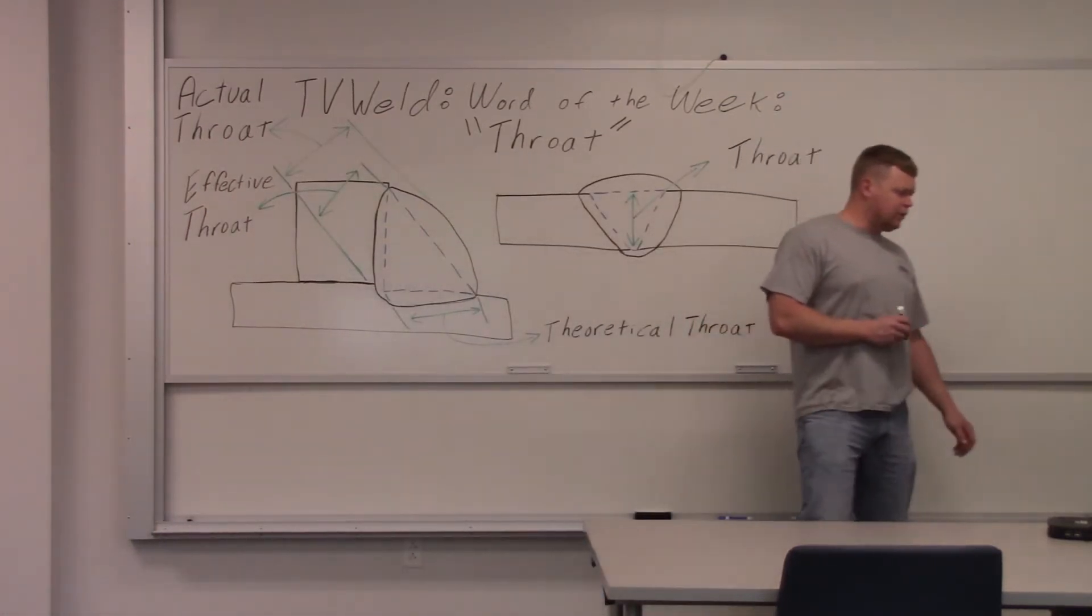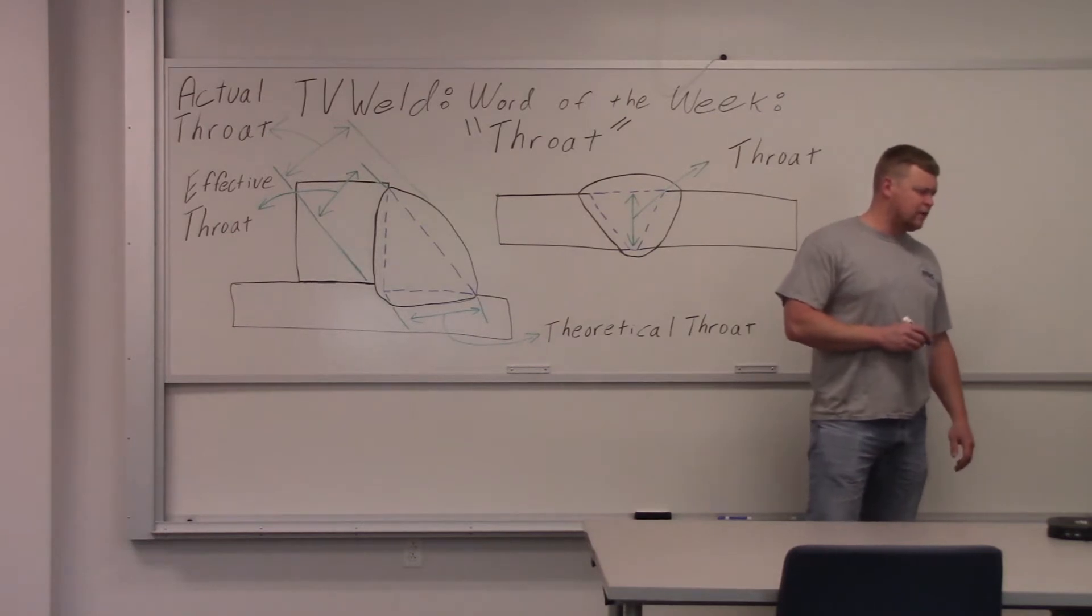Let's read the definition of a throat. I got it over here on computer. The throat of the weld is the distance from the center of the face to the root of the weld. Typically the depth of the throat should be at least as thick as the thickness of the metal that you're welding.